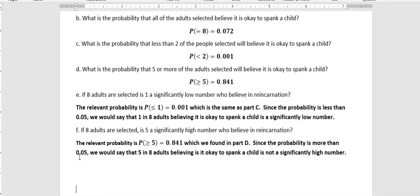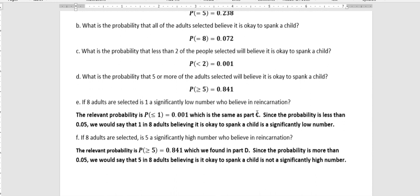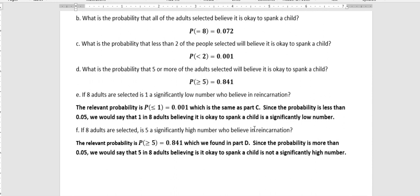Since the probability there is more than 0.05, we would say that five and eight adults believing it is okay to spank a child is not a significantly high number. Even eight is not a significantly high number. Eight is 7%. It's more than 5%, right? So anything five and up is really not a significantly high number because 72% is so high.